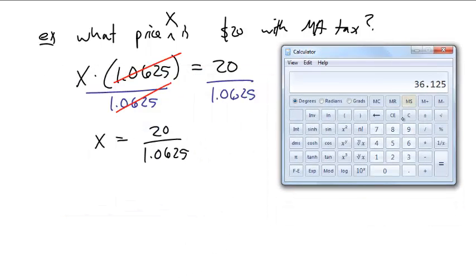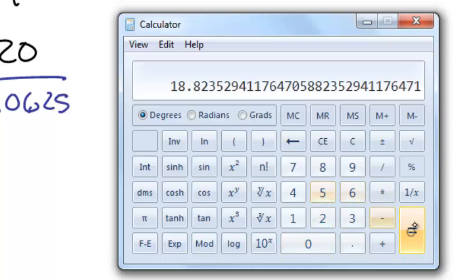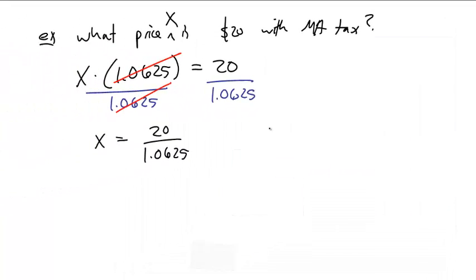Which on the calculator is 20 divided by 1.0625 is $18.82. So if you want to be clever and you want to sell socks, whatever, I don't know what costs 20 bucks these days. Just not what it used to be, but I don't know. I'm getting old. I'm 40 years old. Back in my day, you could get penny candy for a penny. Anyway, if something is $18.82, if you add Massachusetts sales tax, it will come out to exactly 20 bucks. Why? Because this number is 20 over 1.0625. You multiply that by 1.0625, it cancels out. You just have the 20 left. Cool, cute thing. And this concept is going to lead up to what we're going to talk about next.